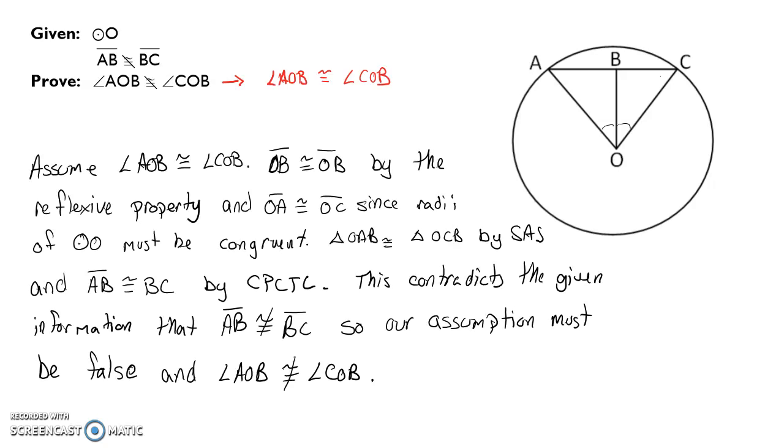All right, so for this last problem, we are assuming that our angles are congruent, and because these angles are congruent, because we have congruent radii and the reflexive property, our triangles are congruent. Because our triangles are congruent, AB is congruent to BC. However, that's our contradiction. AB cannot be congruent to BC. Our assumption must be false, and our angles then are not congruent.